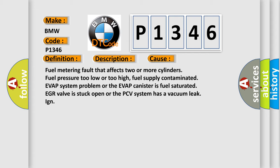Fuel metering fault that affects two or more cylinders, fuel pressure too low or too high, fuel supply contaminated, EVAP system problem or the EVAP canister is fuel saturated, EGR valve is stuck open, or the PCV system has a vacuum leak.